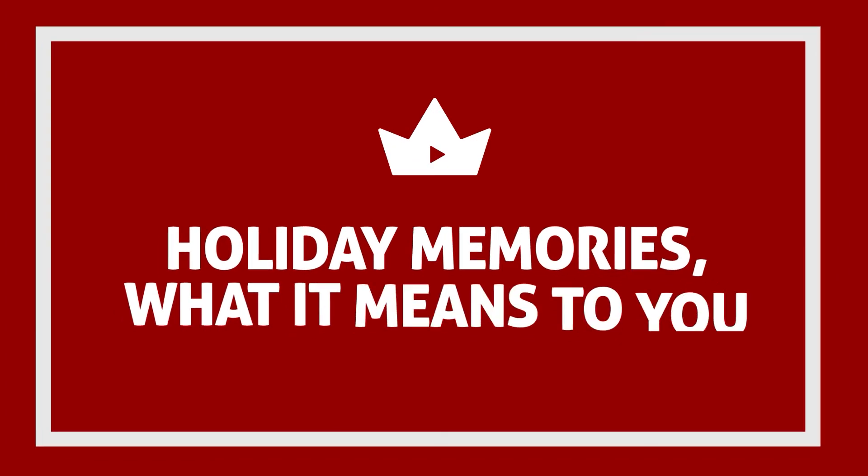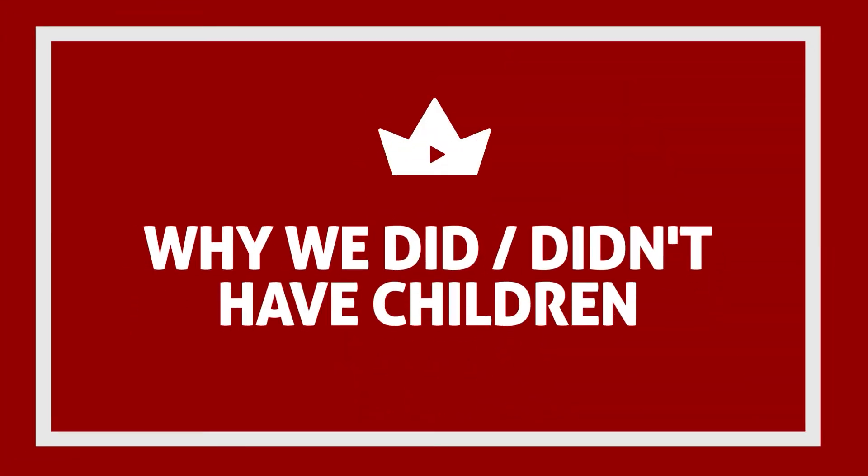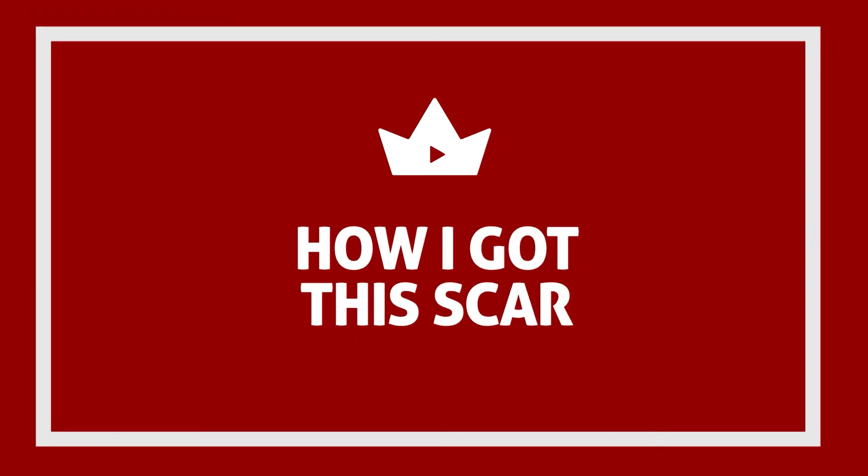Number twenty-one: a holiday memory and what it means to you. You can use Facebook memories for this — sharing something about downtime and holidays is a great conversation starter. Number twenty-two: why we did or didn't have children. It's a personal topic, but it invites people to talk in an open and constructive way. Number twenty-three: how I got this scar. I've got a scar on my thumb from washing the dishes — you can share a story about your scars and where they come from.